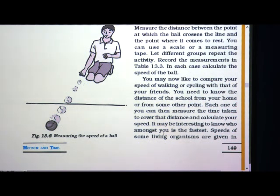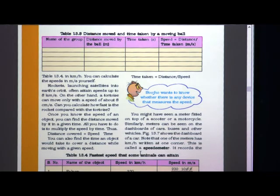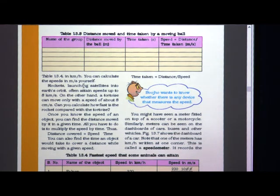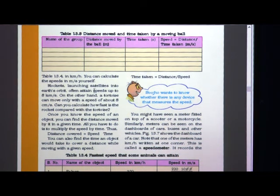Speeds of some living organisms are also given. After this you have to make a table. You have to read table 13.4. You can calculate the speeds in meter per second by yourself from the given data.